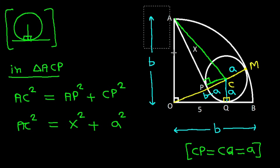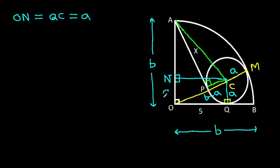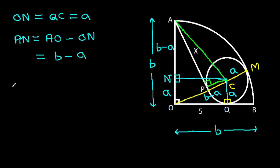From point C, if we make a perpendicular onto AO, suppose this point is N. Then ON will be equal to QC, that will be A. And AN will be AO minus ON, that is B minus A. So AN is B minus A. And NC will be equal to OQ, that will be 5, so NC is 5.